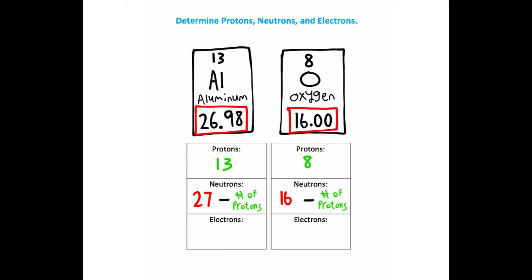If I take each molar mass and round it to a whole number, that's going to give me 27 and 16, respectively. And if I take the number of protons, which we have calculated up here, I can just run this subtraction. That's going to give me 14 neutrons for aluminum and 8 neutrons for oxygen.